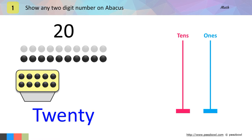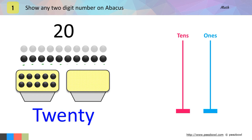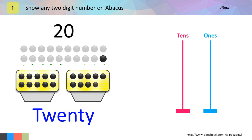Now let us count how many balls are left with us. We have 1, 2, 3, 4, 5, 6, 7, 8, 9 and 10 balls remaining. You already know that when we have 10 balls, we need to keep them in a box. So I will bring a new box. Here we have a second box. Let us keep 10 balls in this box as well — 1, 2, 3, 4, 5, 6, 7, 8, 9 and 10 balls in the second box.